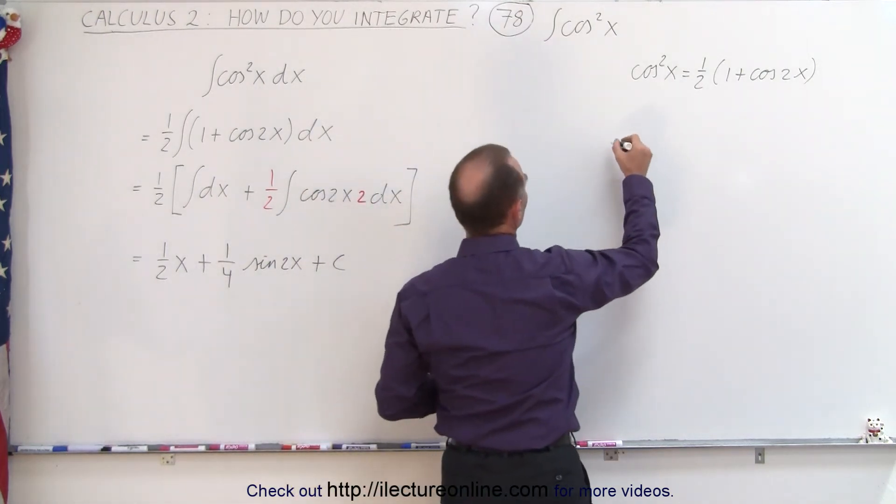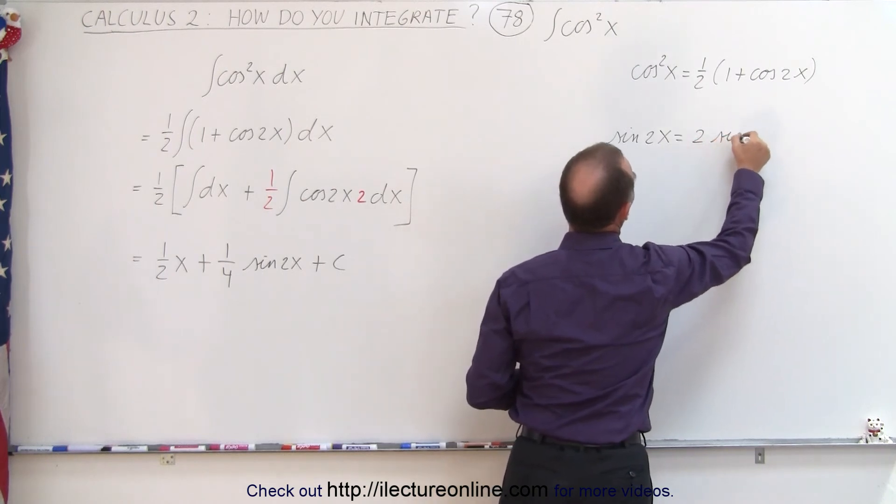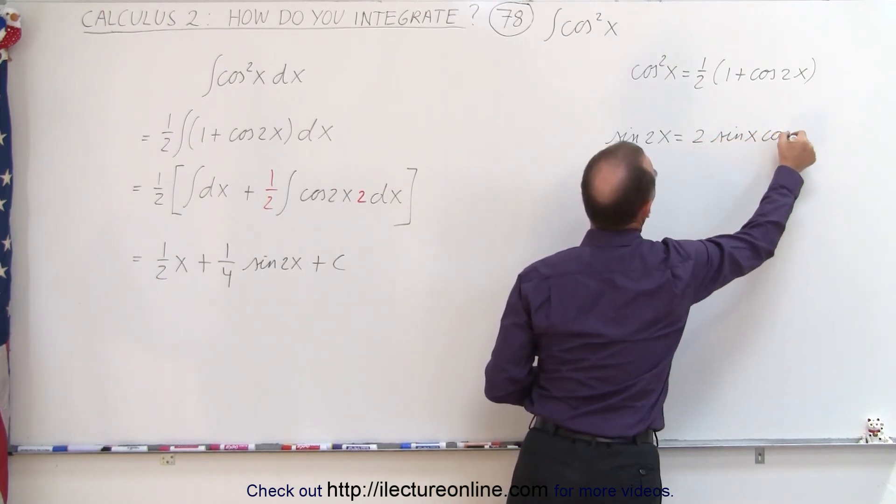They're going to use the identity, where the sine of 2x is equal to 2 times the sine of x times the cosine of x.